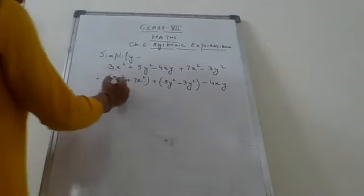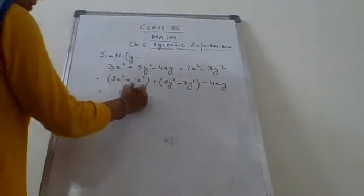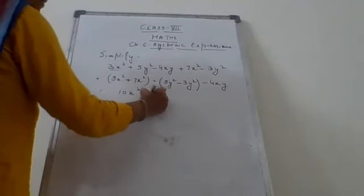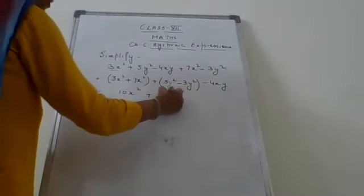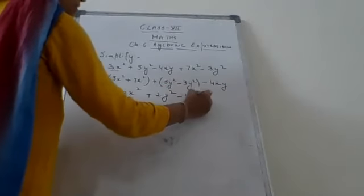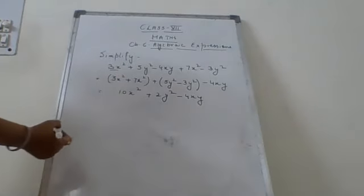Now you can simplify these two like terms. It will be 10x squared, then plus, since 5 minus 3, 2y squared minus 4xy as it is, since there is no other term xy with this to calculate.